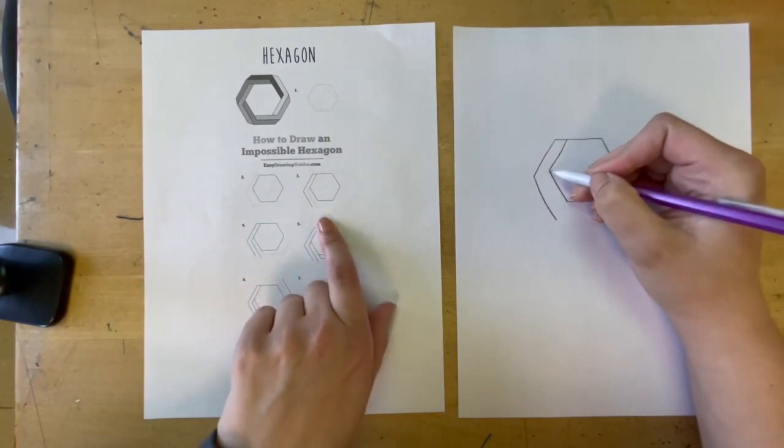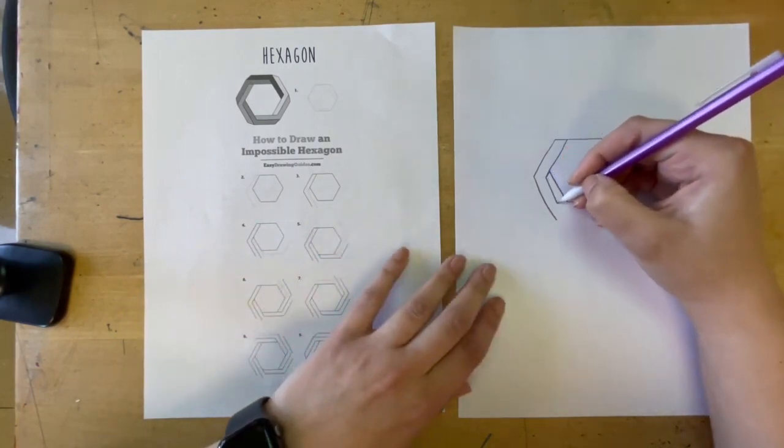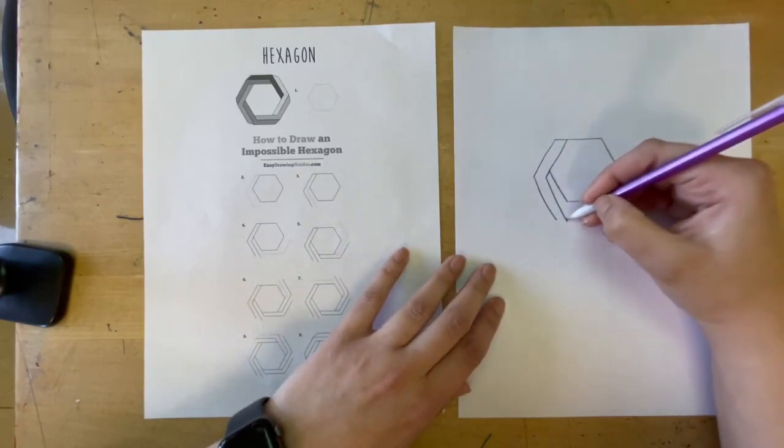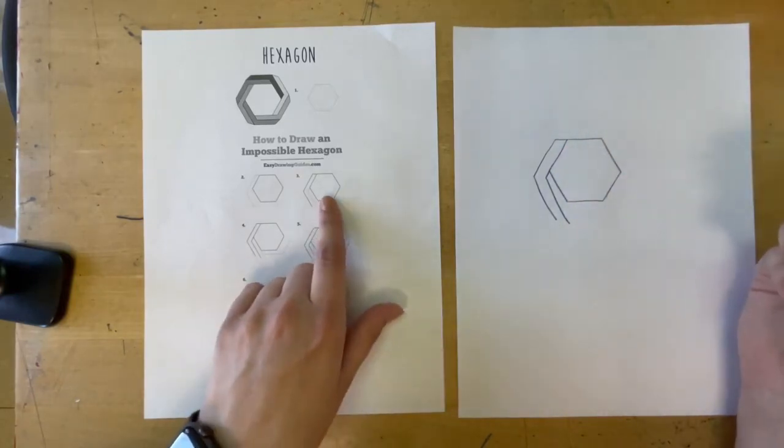And then all the way down here. You can see how far this line goes below this one. Next, I'm starting at this corner here, continuing that line, and going down further past the line I just drew here. So that's step three.